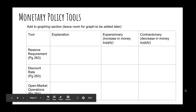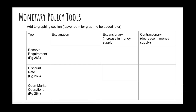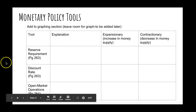For contractionary monetary policy, the Federal Reserve sells Treasury bills. When banks or the general public buy those Treasury bills, they have to give the Fed cash — meaning there are less reserves for banks and less money in the hands of the public, so the money supply decreases. Hopefully that made sense. If you have any questions, please let me know.